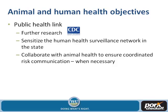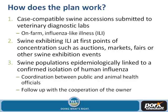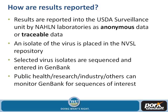The plan has three streams: case-compatible ones submitted by a veterinarian — a clinically ill animal with on-farm influenza-like surveillance; those at points of concentration like auctions, markets, and fairs; and situations where there's a suspected epidemiological link to a human case. Results are reported into the USDA surveillance system by the National Animal Health Laboratory Networks as either anonymous or traceable data, as indicated when the sample is submitted. Once the virus is isolated, it's placed in the NVSL repository.